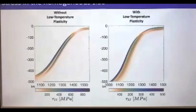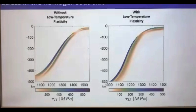Looking at the second invariant of stress: without low-temperature plasticity (dislocation and diffusion creep only), we can reach up to 800–900 MPa. But with low-temperature plasticity — more realistic models — stresses are much smaller and hardly reach 0.5 GPa. These stress values are too low to explain brittle failure at 70 km depth.